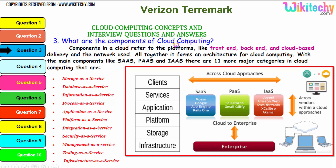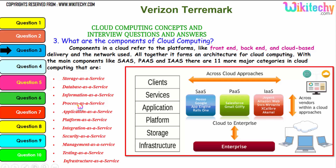Now let's talk about the components of cloud computing. Components in a cloud refer to platforms like front-end, back-end, cloud-based delivery, and the network used. Together they form an architecture for cloud computing, with the main components being Software as a Service, Platform as a Service, and Infrastructure as a Service. There are 11 major categories in cloud: storage, database, information, process, application platform, integration, security, management, testing, and infrastructure — additional services associated with the three major services.